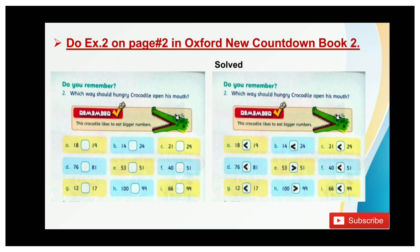In part D, 76 is smaller than 81, now put the smaller sign. In part E, 53 is greater than 51, now put the greater sign. In part F, 40 is smaller than 51, now put the smaller sign.